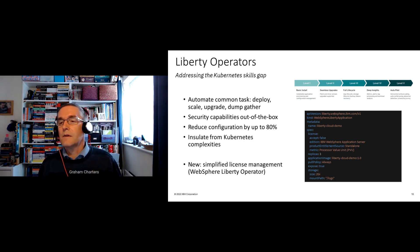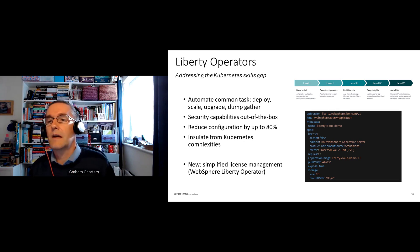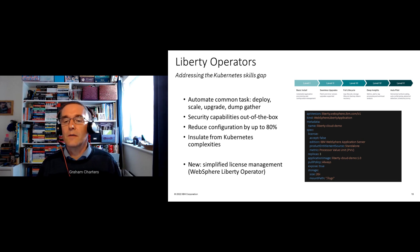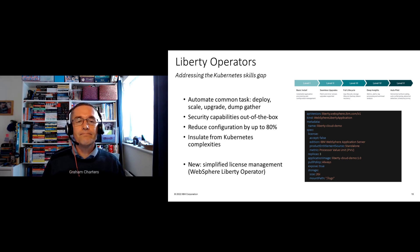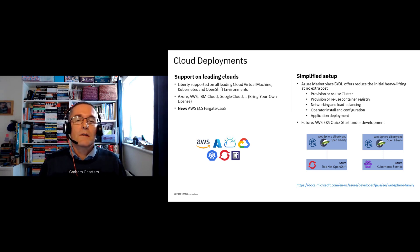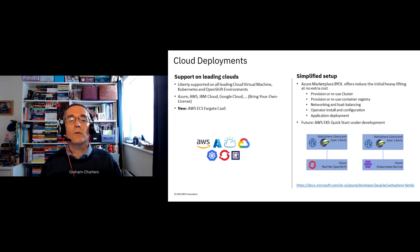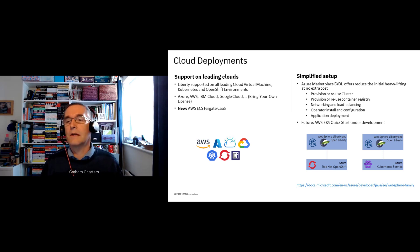In terms of recent developments, we've had an Open Liberty operator for a while. We've just recently released a WebSphere Liberty operator that also lets you deploy WebSphere Liberty and Open Liberty in a supported way, adding configuration required for entitlement tracking. Liberty is supported in all leading clouds — Azure, AWS, IBM Cloud, Google Cloud — and in leading virtualization technologies including virtual machines, containers, Kubernetes, and OpenShift.